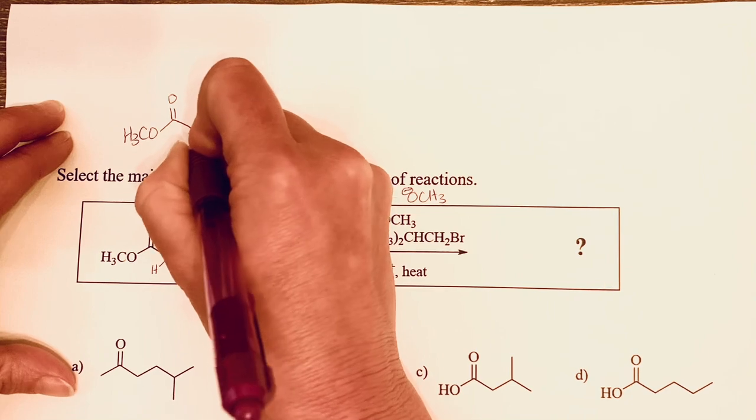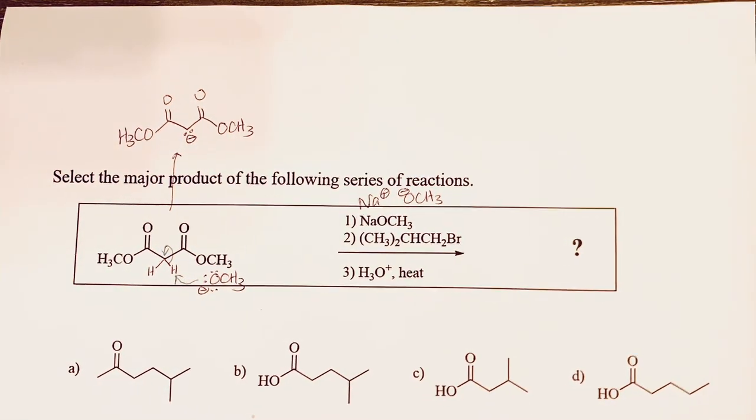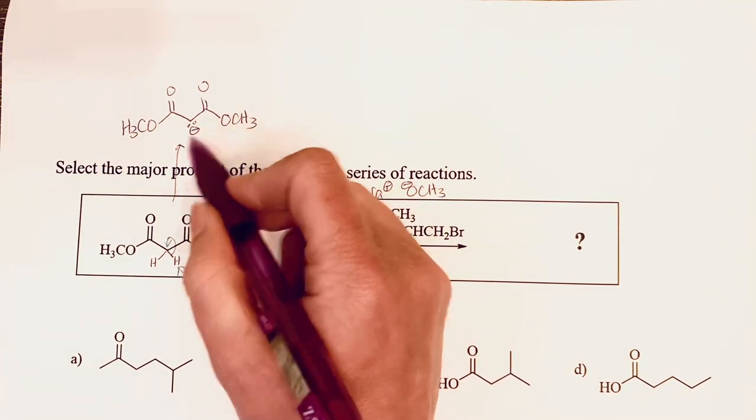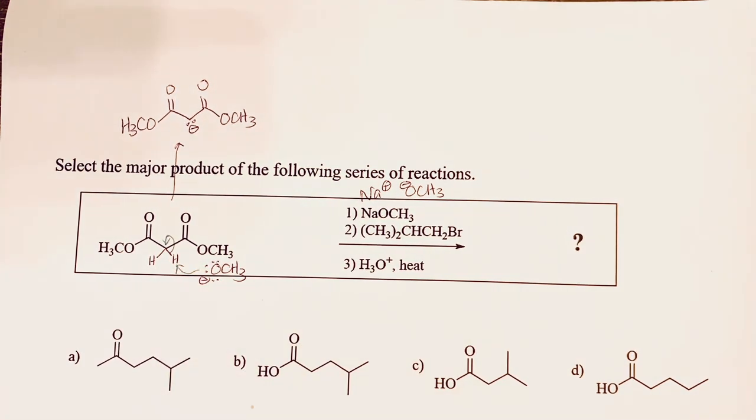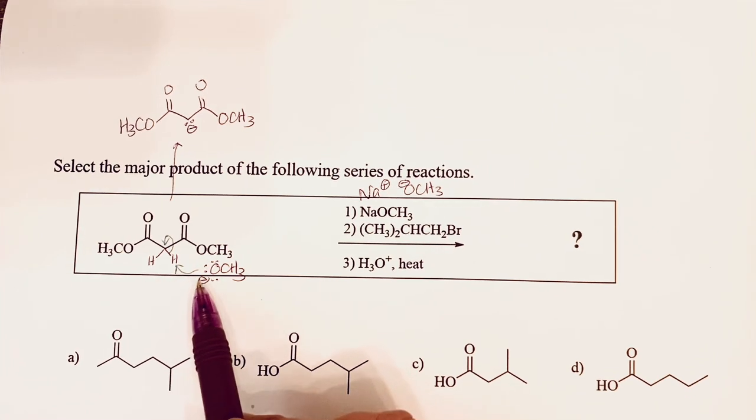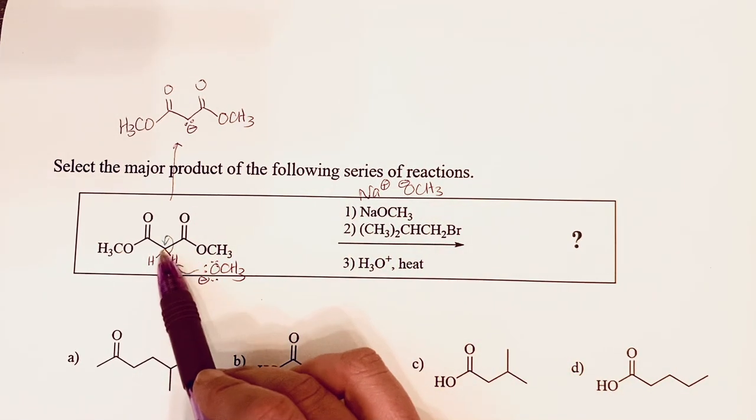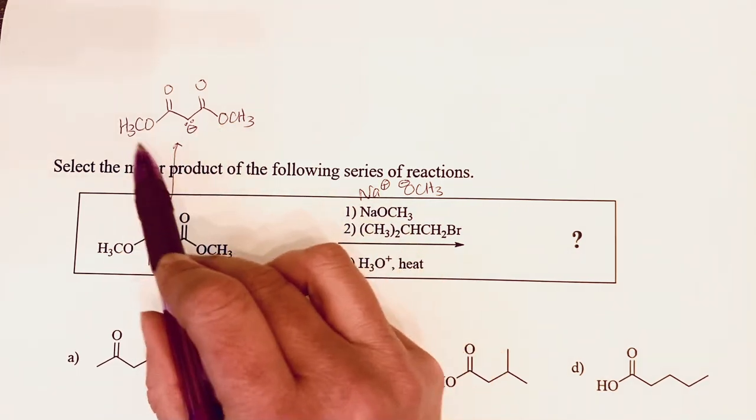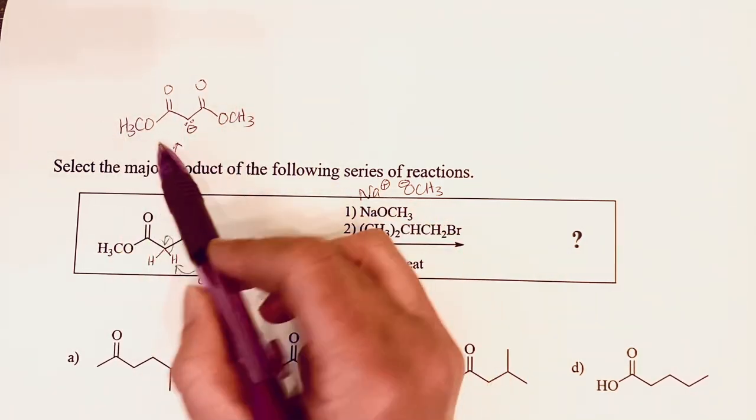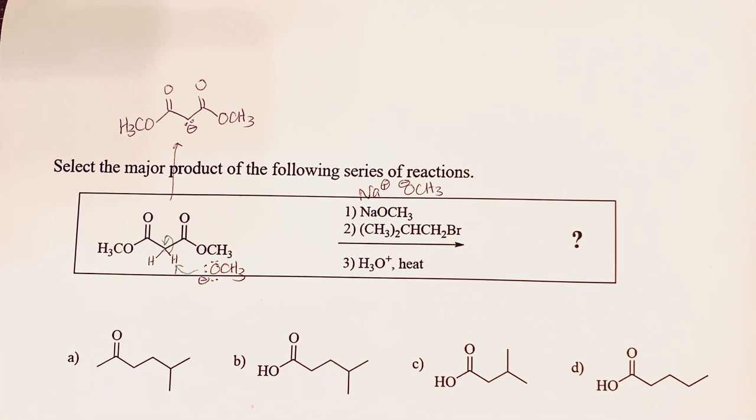We're going to form this enolate, and that enolate is stabilized by resonance with both of those carbonyls. That's what makes that the most acidic hydrogen in the molecule. If you're comfortable with this deprotonation step already and you can just picture this is a base removing a proton, you can jump right to that enolate structure.